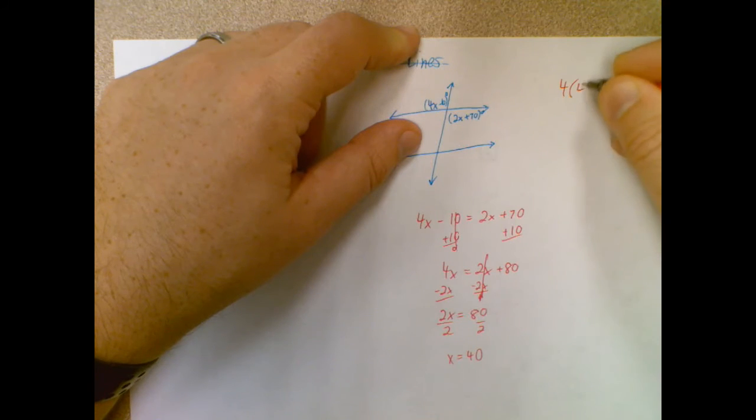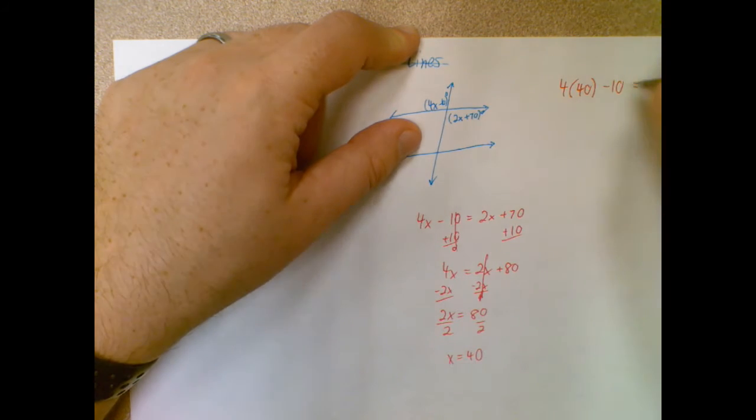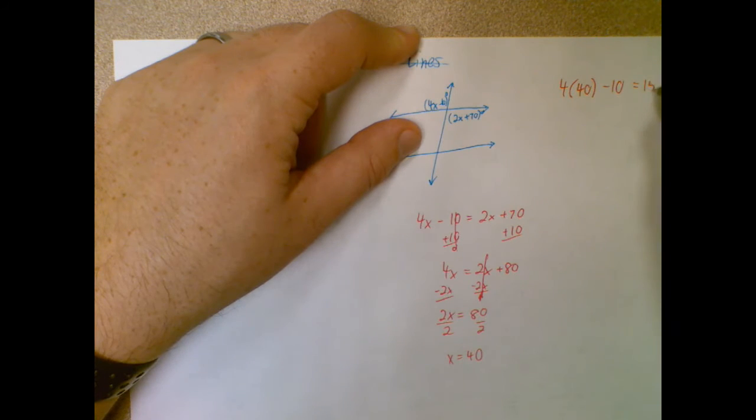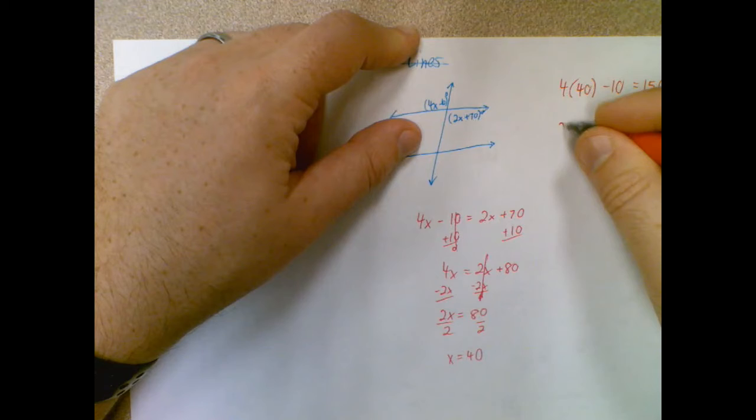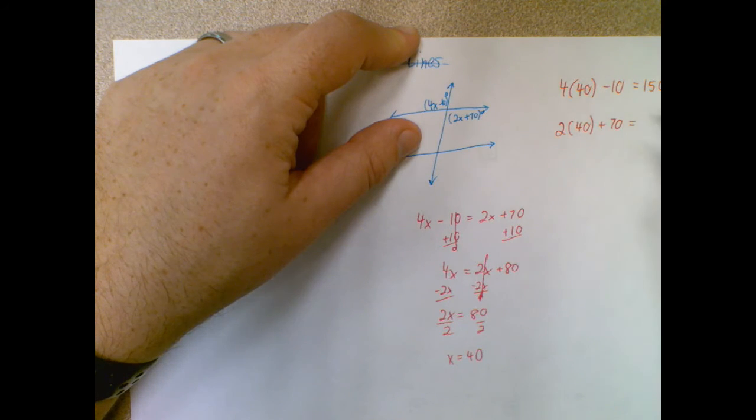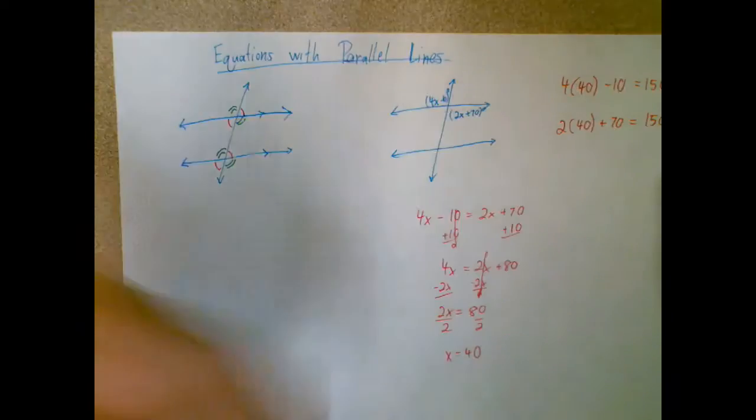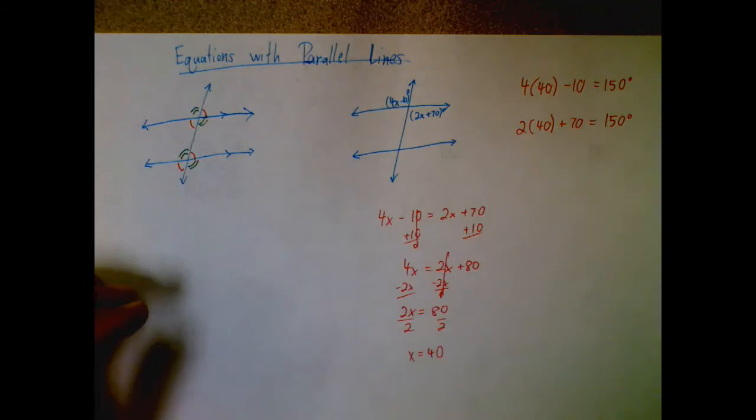So I have 4 times 40 minus 10, which is 160 minus 10, equals 150 degrees. Let's try the second one: 2 times 40 plus 70, which is 80 plus 70, also equals 150. So they're both equal, both angles are 150 degrees.